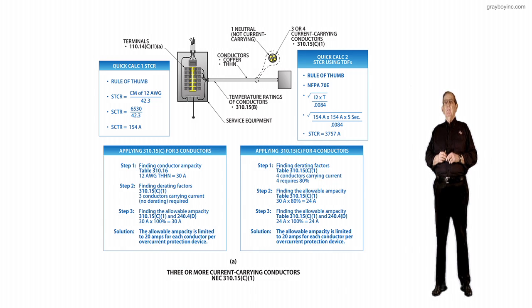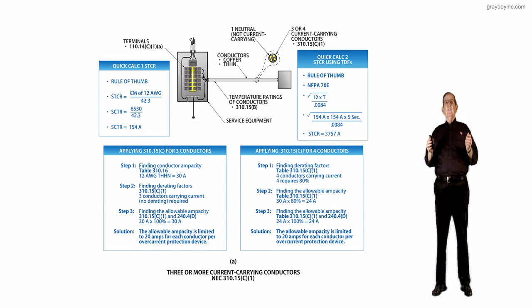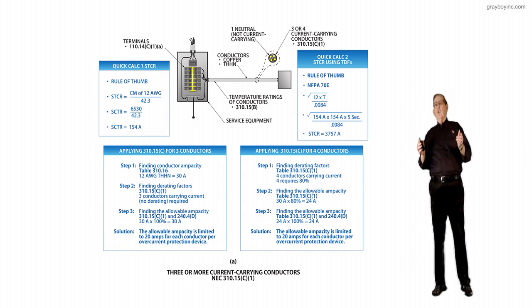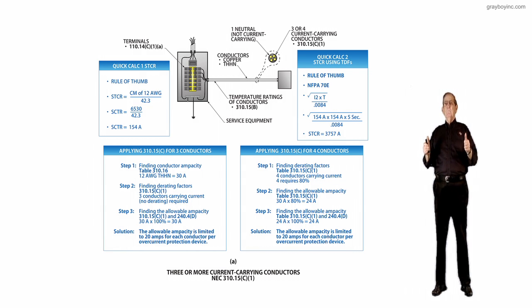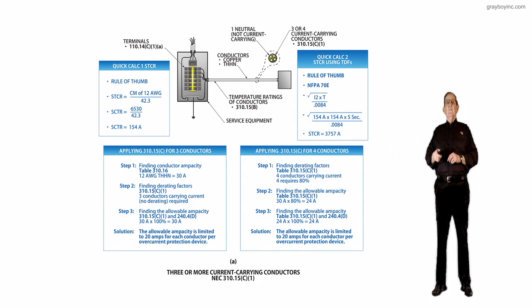Now if you wanted to look at a situation where the inspector would want to know how many amps you have for short-time current rating or long-time current rating. This is kind of a rule of thumb, but if you look at the short-time current rating, you would take the circular mill of a number 12 wire from table 8 to chapter 9, and you'd find it's 6,530 circular mill. The divider that you use is 42.3. You do your math, and it'll pull 154 amps for about 5 seconds.